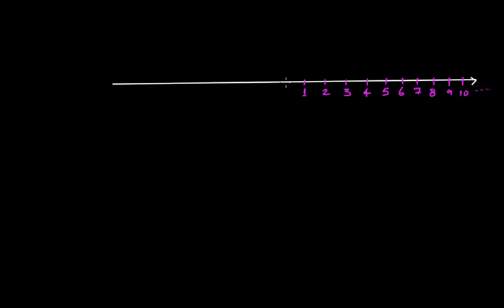If we have to represent whole numbers, we only need to introduce zero here, because we know that if we include zero in natural numbers, it makes that set whole numbers. So this is the representation of whole numbers.